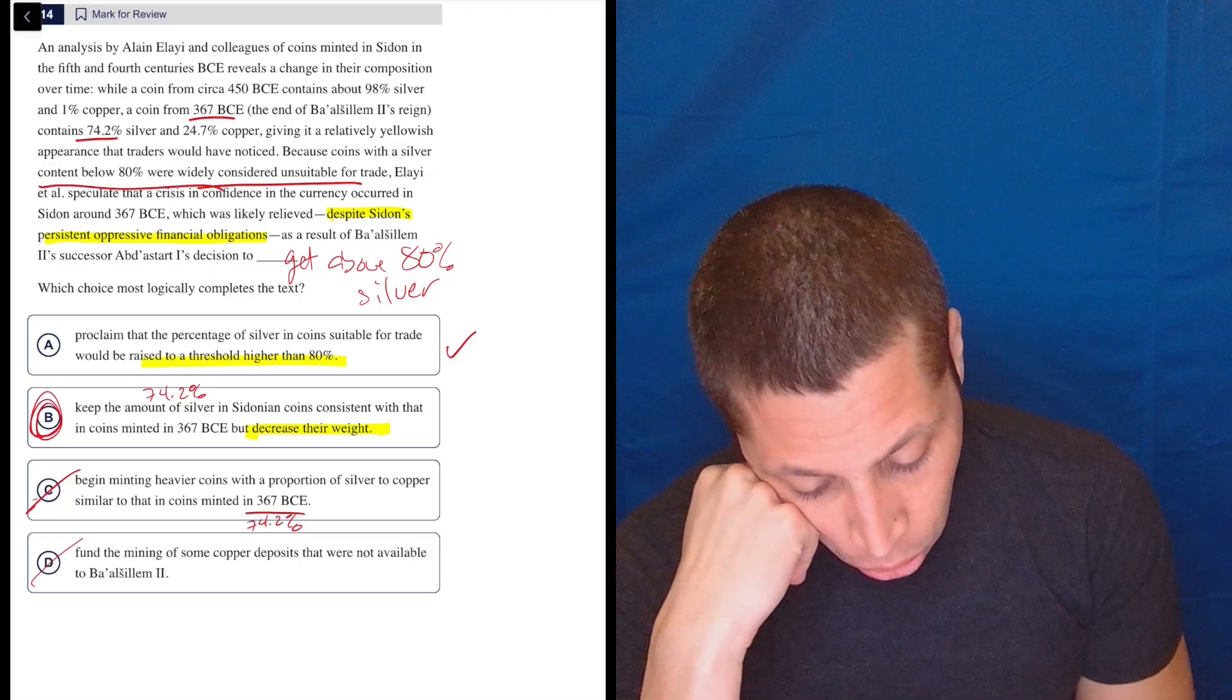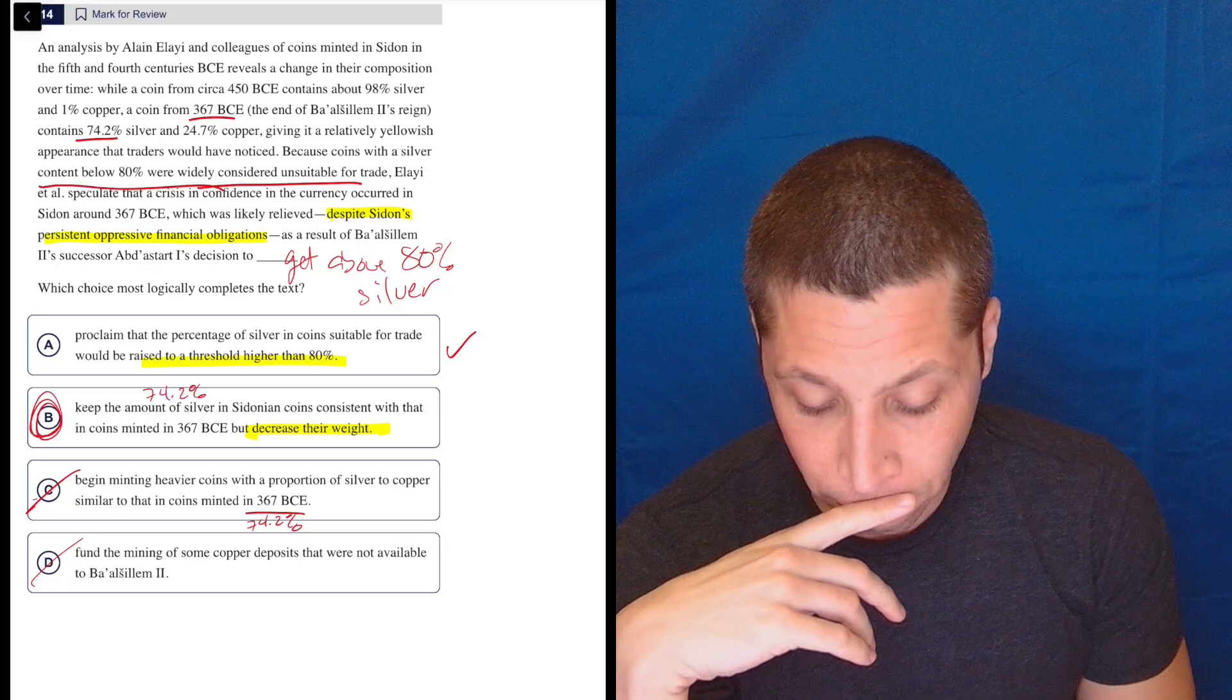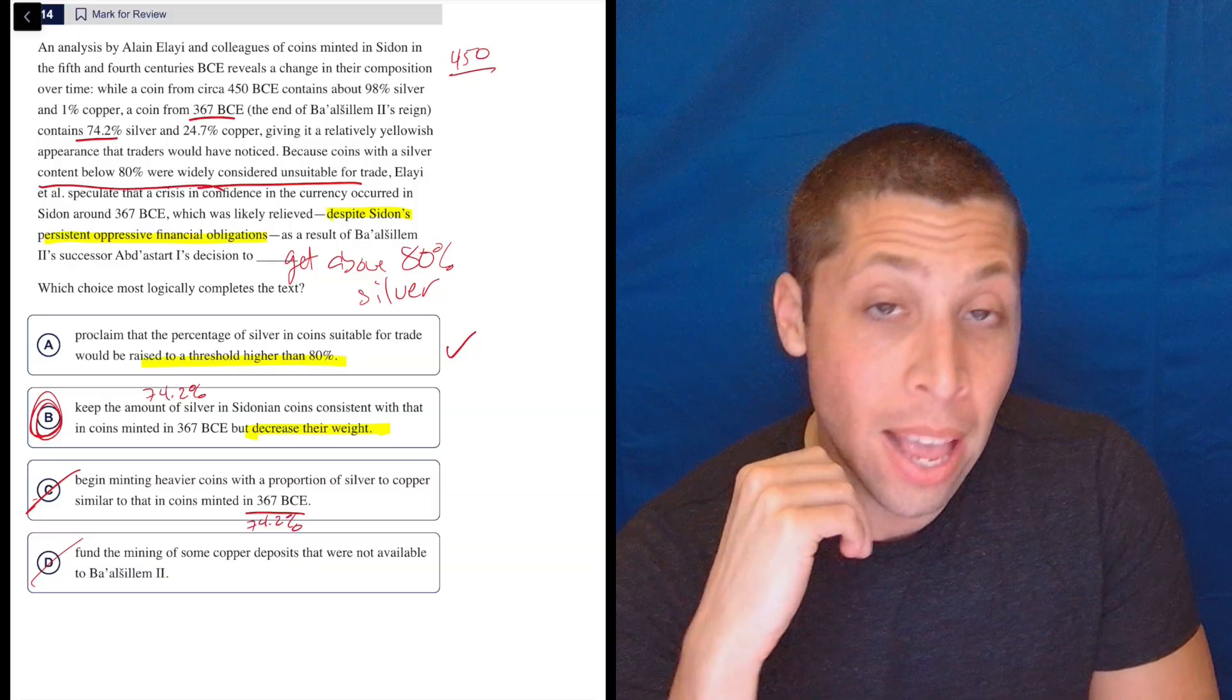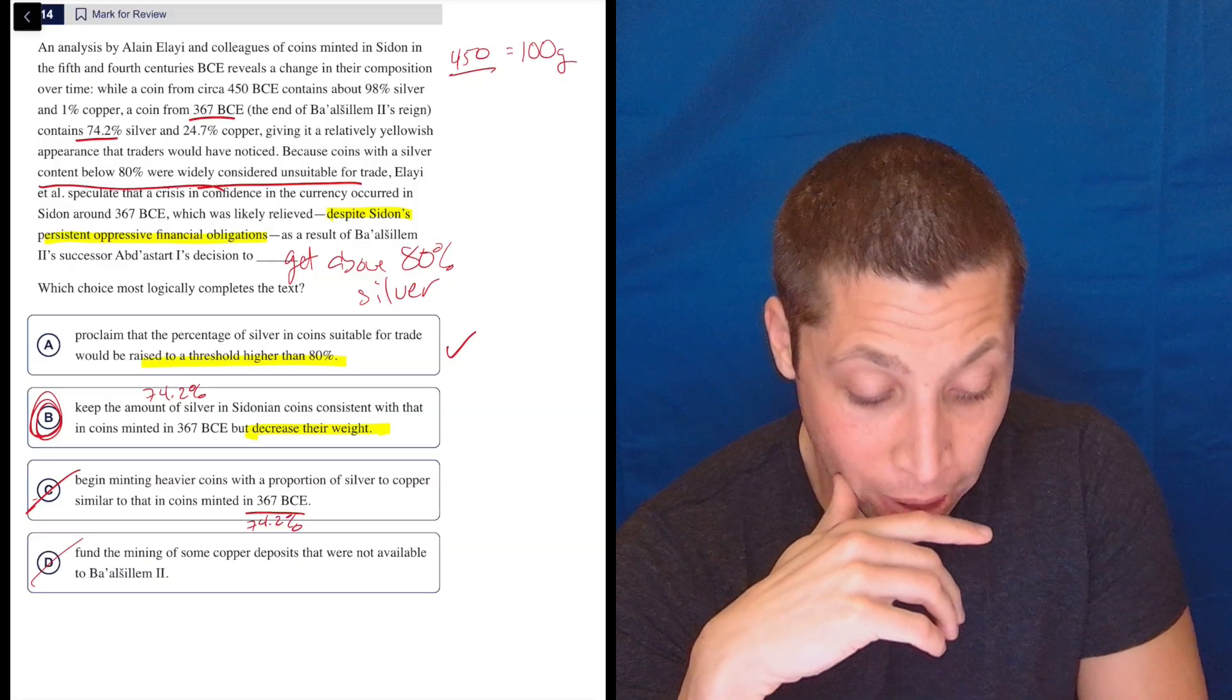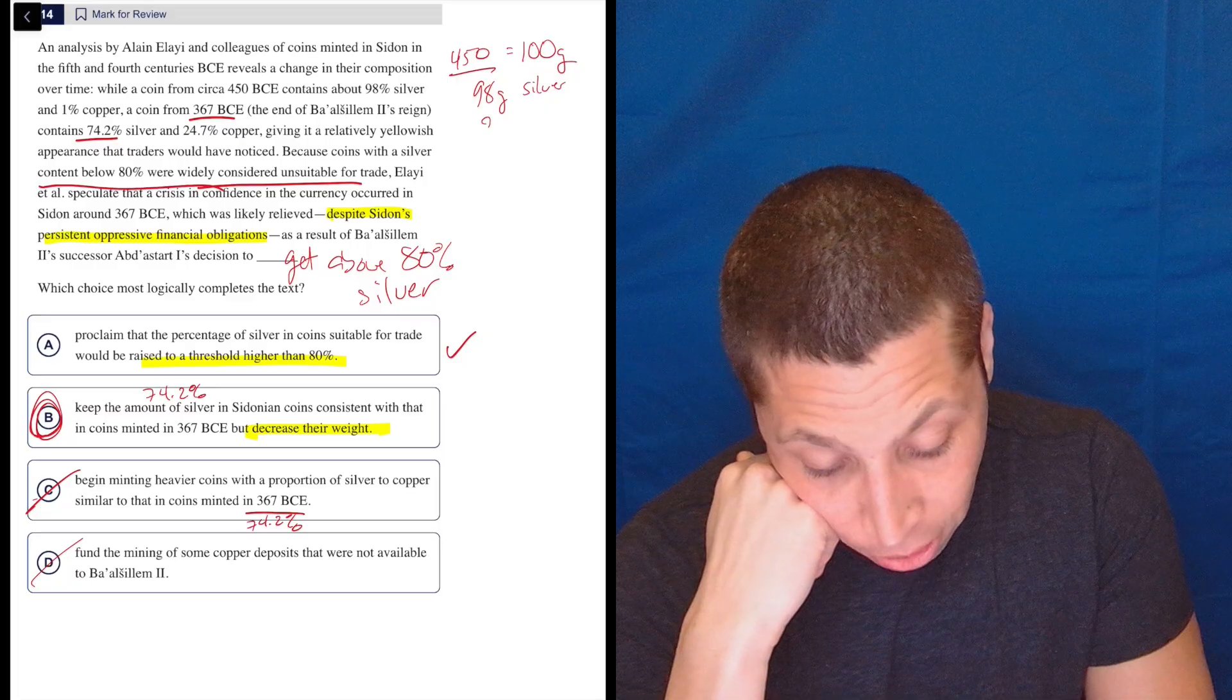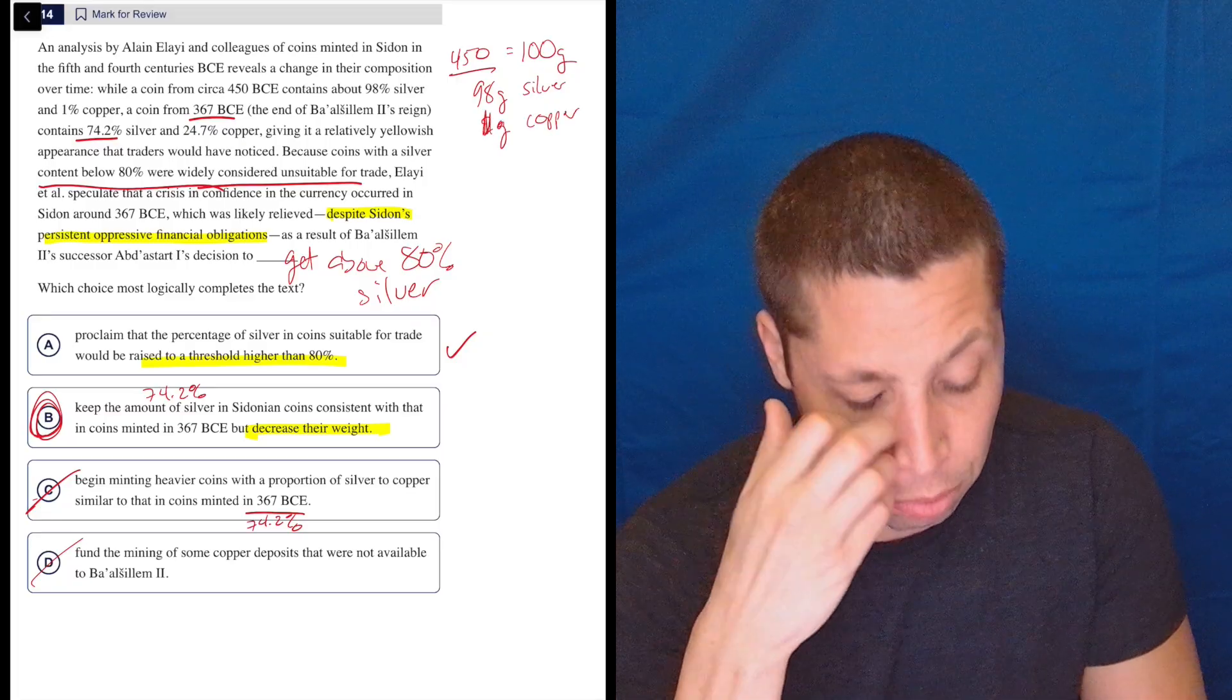I would love to talk to someone who wrote this question and be like, what are you thinking here? But I kind of get it. So I'm going to do my best to say, here's the reason why B is right. If you were to keep the amount of silver the same, let's round this stuff off. Let's say in 450, we have a coin weighs, I don't know, a hundred grams. In 450, that coin is 98 grams of silver and one gram of copper. So I guess there's another gram of something else, but who cares? That's what they're saying.